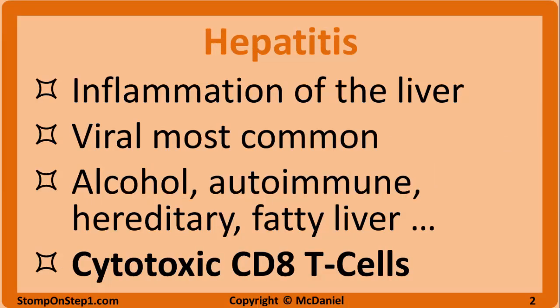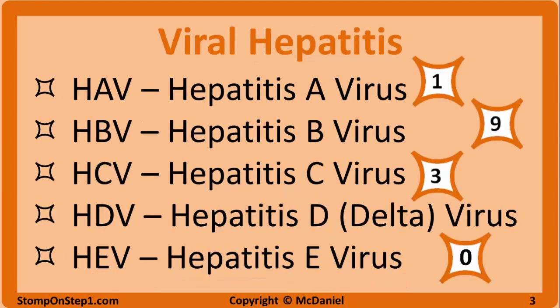Hepatitis is inflammation of the liver. The most common cause of hepatitis is viral hepatitis, but there are many other disease processes such as fatty liver disease, alcohol, medications, hereditary diseases, and autoimmune diseases that can cause hepatitis. We will cover those topics in other videos. This video will focus on viral hepatitis, but it should also be noted that other viruses such as EBV, CMV, and herpes can cause liver inflammation as well. In viral hepatitis, damage to the liver results from cytotoxic CD8 T cells killing hepatocytes that are infected with the virus. There are five types of viral hepatitis, hepatitis A through hepatitis E.